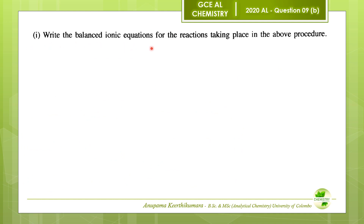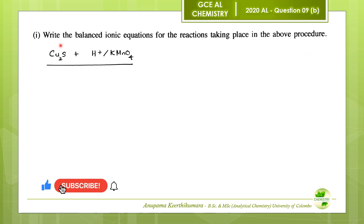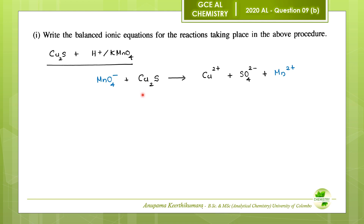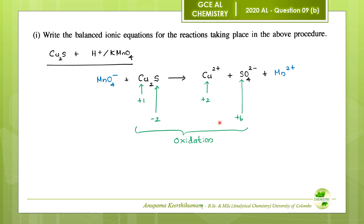Question 1: Write the balanced ionic equations for the reactions in the procedure. First, for the reaction between copper(I) sulfide and potassium permanganate in acidic medium: Cu⁺ ions oxidize to Cu²⁺ ions and sulfide ions oxidize to sulfate ions, while permanganate ions reduce to Mn²⁺ ions. We need to find the number of electrons involved. Two Cu⁺ ions are involved in the formula unit of Cu₂S.